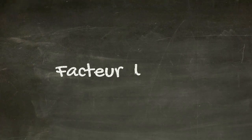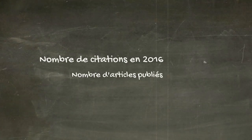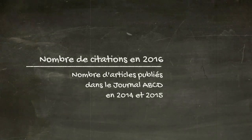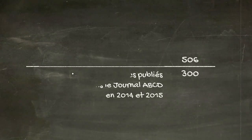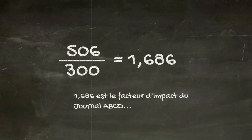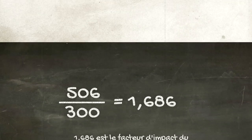Mais qu'est-ce que le facteur d'impact? Le facteur d'impact est un indicateur de notoriété des revues scientifiques fondé sur un calcul du taux de citation des articles. Mais attention, son rôle est moins significatif en sciences humaines et sociales.